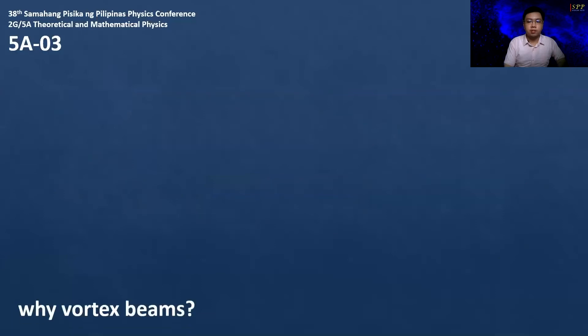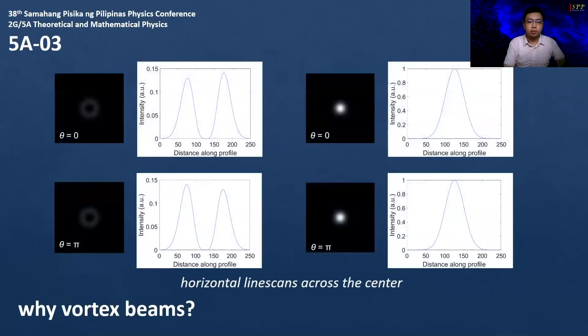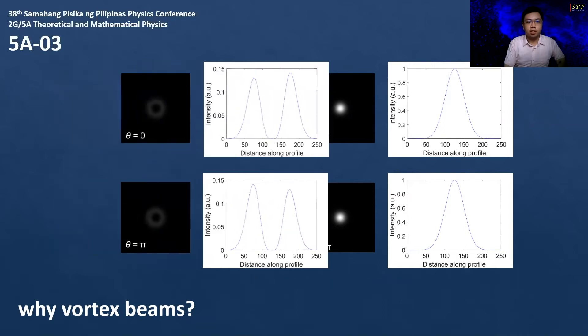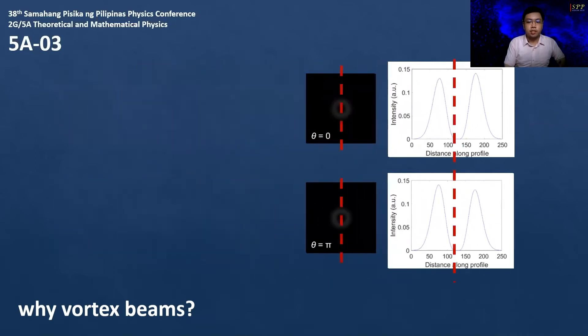In terms of the intensity, the optical vortex shows the movement more noticeably as compared to the off-centered Gaussian beam only. To make the movement more perceivable, we employed quadrant detection, subtracting the image's left-half intensity to the right-half.